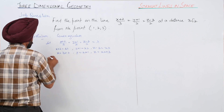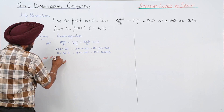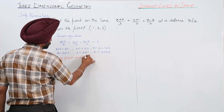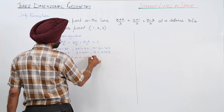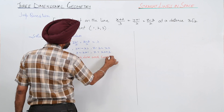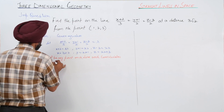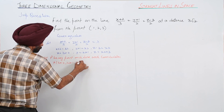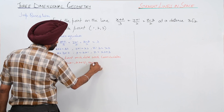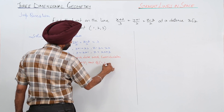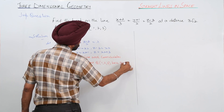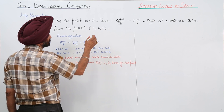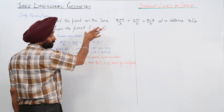Let P be any point on the line with coordinates P(3λ - 2, 2λ - 1, 2λ + 3), and Q(1, 2, 3) be the given point. We have two points because the distance is already given — one point is P and one point is Q.